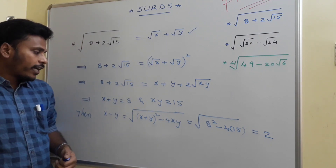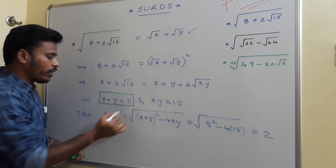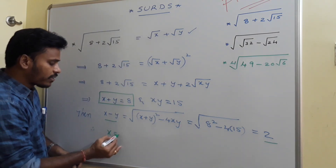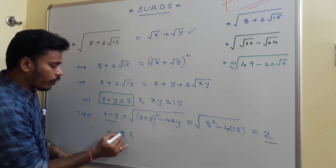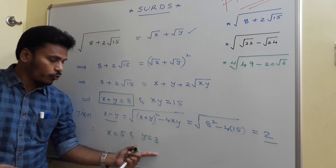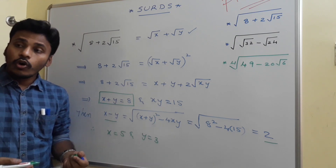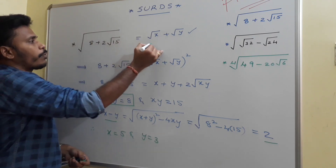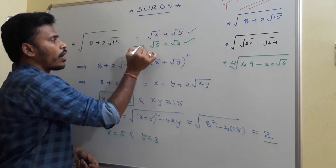Now we have x plus y equals 8 and x minus y equals 2. From these two equations, we can conclude x equals 5 and y equals 3, since 5 plus 3 is 8 and 5 minus 3 is 2. So the square root of 8 plus 2 root 15 is root 5 plus root 3.